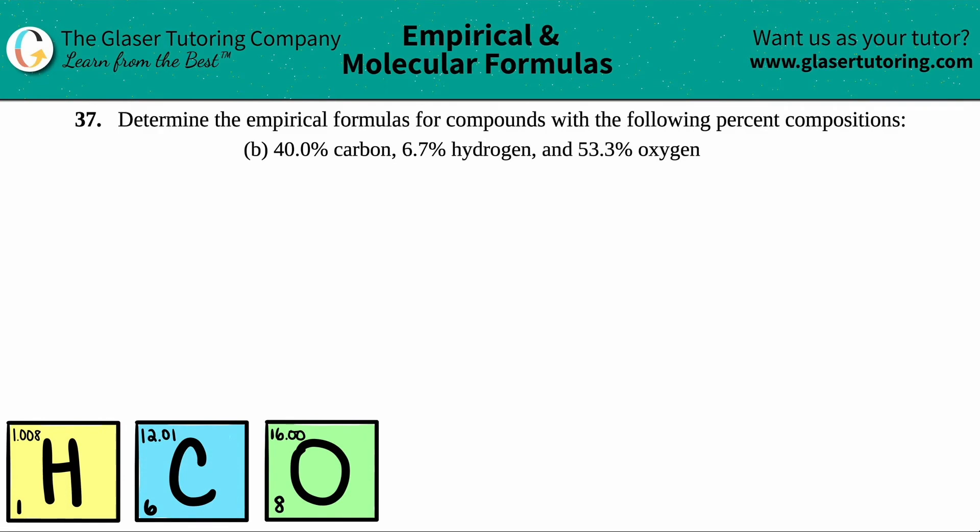Number 37, determine the empirical formulas for compounds with the following percent compositions. And then we have letter B. So in this case, we have to come up with an empirical formula with percents of 40% carbon, 6.7% hydrogen, and 53.3% oxygen.